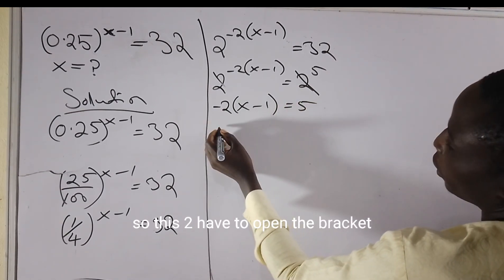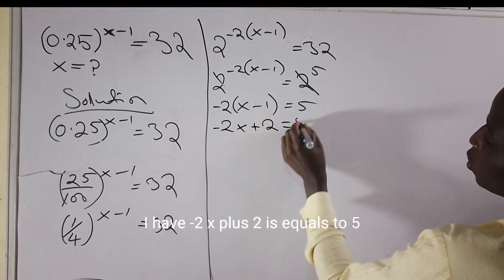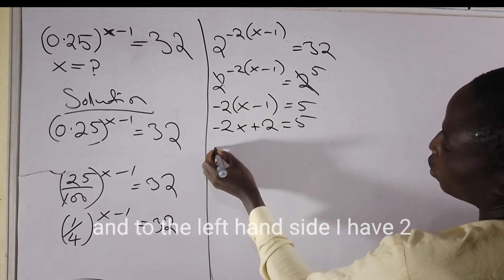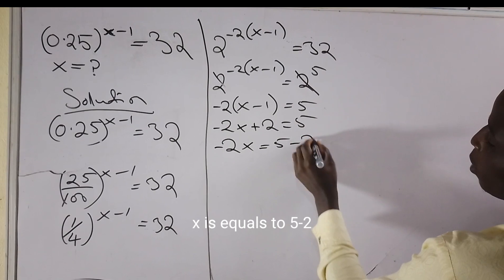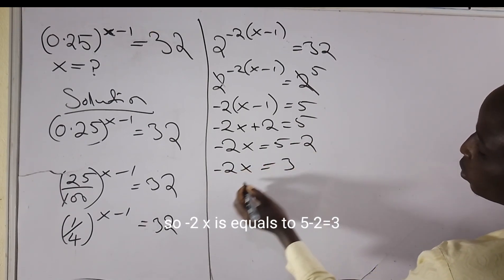I have to open the bracket: minus 2x plus 2 equals 5. I have to send this 2 to the right hand side, so on the left hand side I have minus 2x equals 5 minus 2. So minus 2x equals 3.